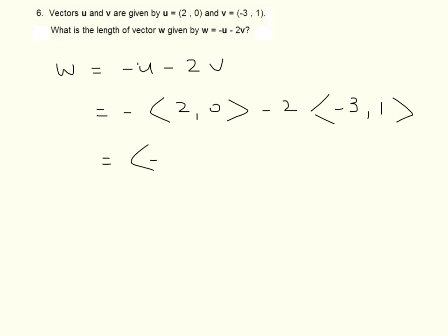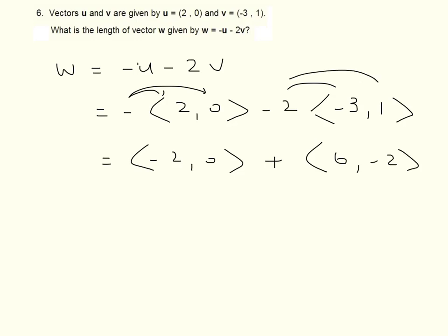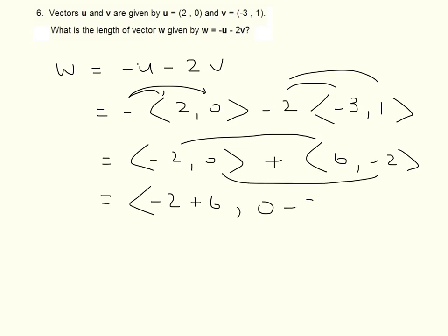Which gives negative 2, 0, multiplying, plus multiplying 6, negative 2. This gives the components of vector W as negative 2 plus 6, and 0, negative 2, which gives 4, negative 2.